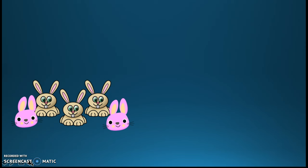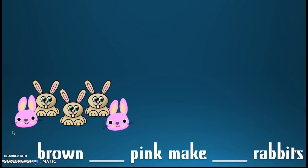Here I have some cute bunnies — they must be getting ready for the spring! Let's talk about what we see: some pink bunnies and some brown bunnies. I wrote: blank brown and blank pink makes blank rabbits. So how many brown rabbits do you see? One, two, three — three brown rabbits. And how many pink ones? One, two — yeah, two. So three brown and two pink make how many rabbits all together? One, two, three, four, five. Perfecto! We just decided our parts and our whole amount already using our words.